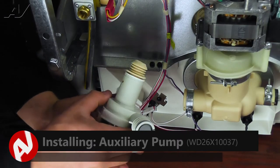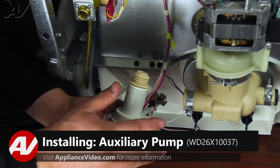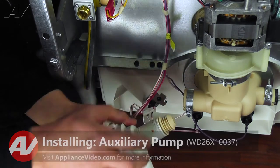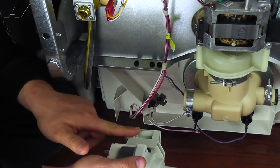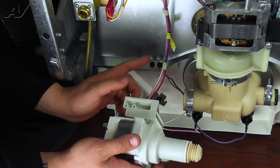To install the pump, take note that there is a drain line and a line going to the sump. Also take note of the screw holes on the pump. These will be lined up with the screw holes on the frame of the dishwasher.